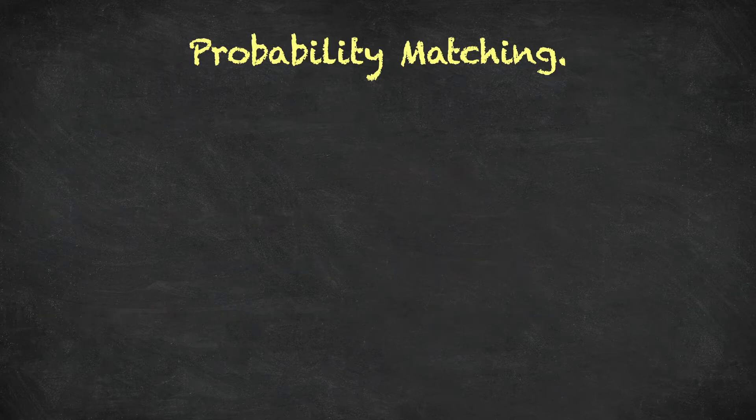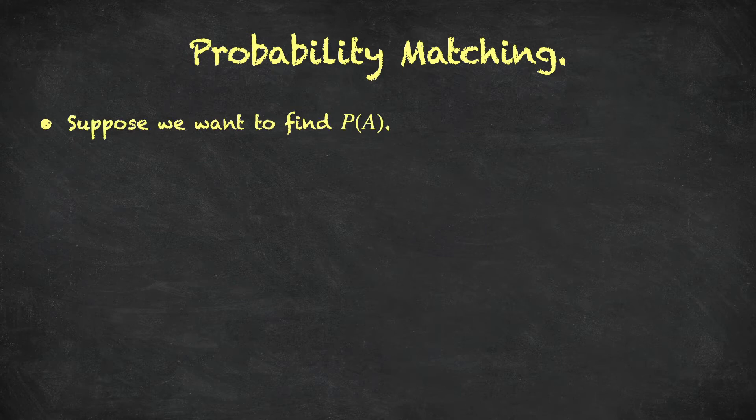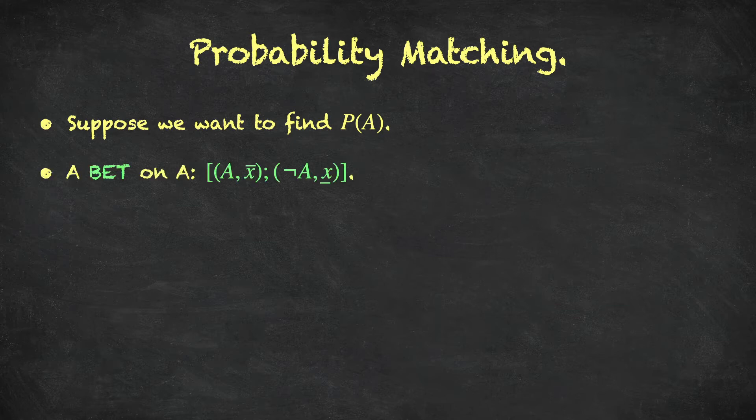Using the probability matching technique, we'll be able to find the probability of any particular event. So suppose we want to find the probability of event A, or the value that the probability measure, capital P, assigns to the event A. Well, this object is called a bet on event A. So what is a bet? It is essentially we have two outcomes, over line x and under line x. And remember, we denoted over line x as the best outcome. So under this particular action that we're looking at in green, this says if the event A happens, you get the best outcome, over line x. And if the event not A happens, then you get the worst outcome, under line x. So this is called a bet on A.